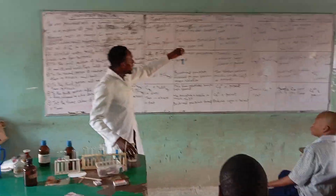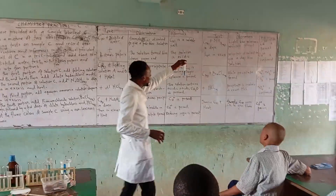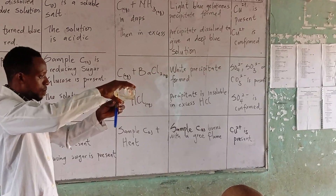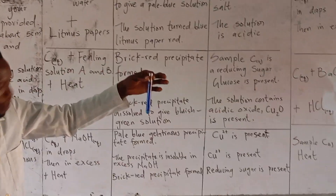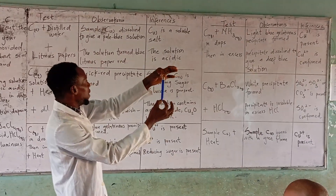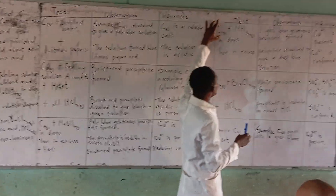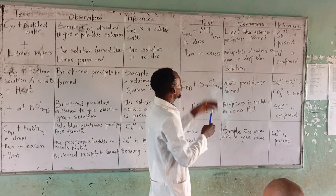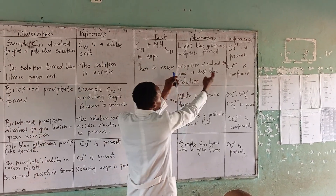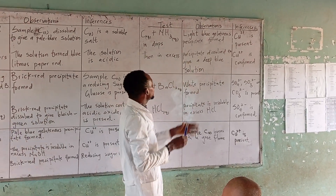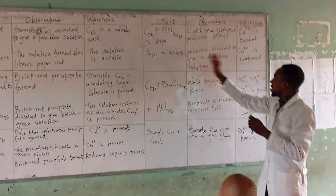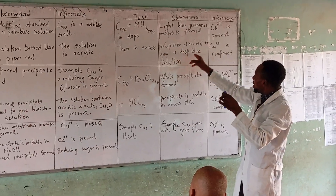This is aqueous ammonia. We have added aqueous ammonia in drops and we can get a light blue gelatinous precipitate. Now let's put it in excess and see what we get. In excess, the precipitate has dissolved to give a deep blue solution — this is deep blue, not light blue. So you record: aqueous solution of sample C plus aqueous ammonia in drops → light blue or pale blue gelatinous precipitate formed. Then in excess: the precipitate dissolved to give a deep blue solution.